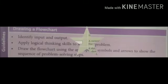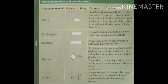With the help of this table, we will get to know about which geometrical shape is used for what purpose. First one is ellipse. An ellipse is used to indicate the start and end of a flowchart.